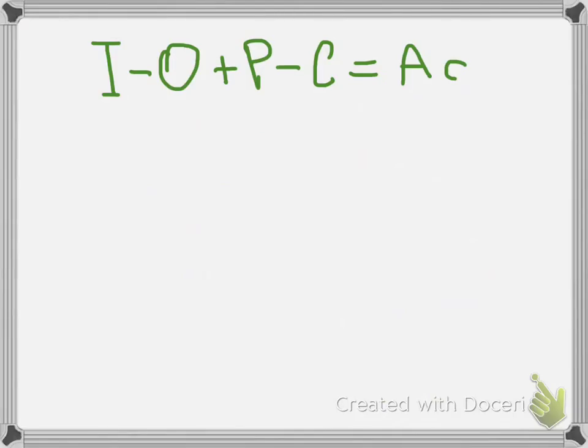The general equation of the mass balance is input minus output plus production minus consumption equals accumulation. If there is no chemical reaction then production and consumption are zero. And our equation reduces to input minus output equals accumulation.